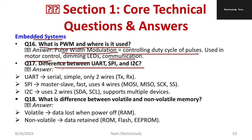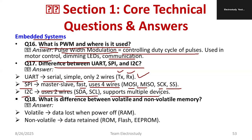Differences between UART, SPI, and I2C: UART is serial and simple, using only two wires (TX and RX). SPI is a master-slave protocol, fast, using four wires: MOSI, MISO, SCLK, and SS. I2C uses two wires — SDA and SCL — and supports multiple devices on the same bus.